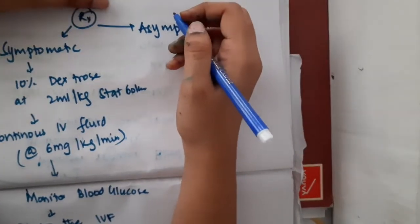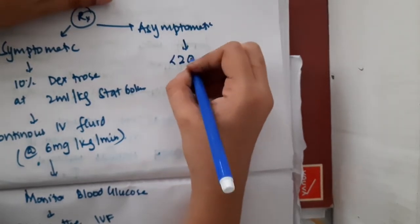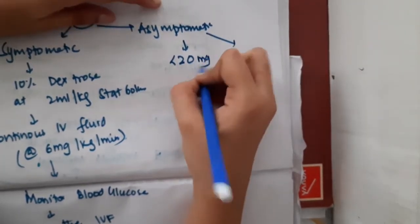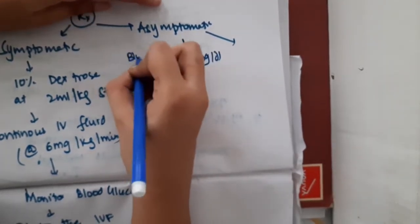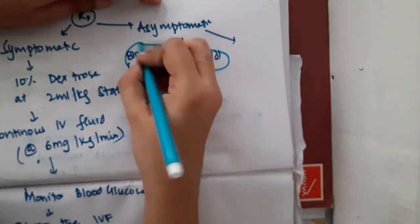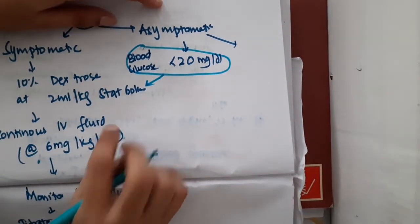Next, if the baby is asymptomatic, then you should see the value. If the blood glucose levels are less than 20 milligrams per deciliter, then you should give IV dextrose followed by IV fluids.